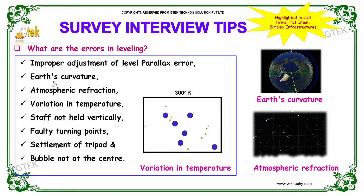The next error is the earth's curvature. Atmospheric refraction can also be an error in levelling.